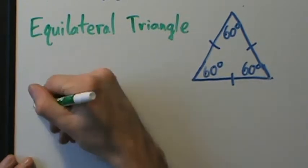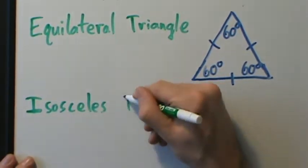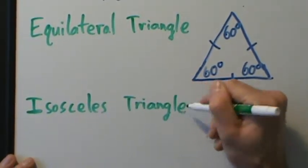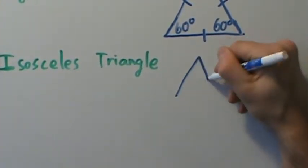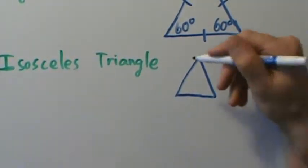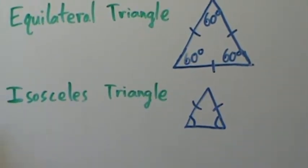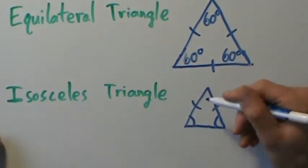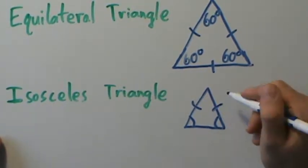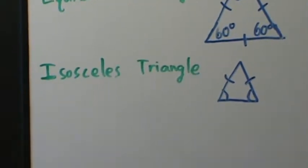Next is an isosceles triangle. In an isosceles triangle, two of the sides have the same length. Because two sides are equal, the two angles across from those sides have the same measure. We don't know the exact measures without more information, but those two base angles are always equal to each other.